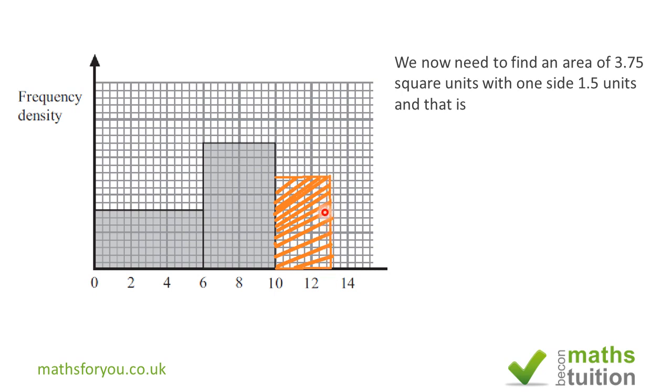And to do that, we divide the 3.75 by this horizontal length of 1.5, and then we get 2.5 unit lengths vertically. So that is going to be one and two and then 2.5 unit lengths there. So this area is occupied by the 75 trees. I hope all that made some sense, and thank you for watching. Bye bye now.